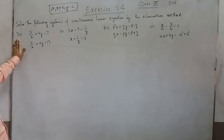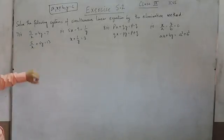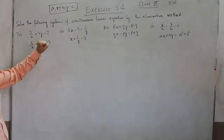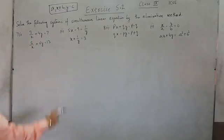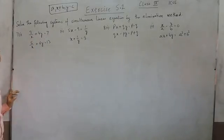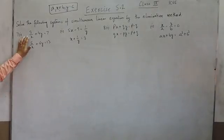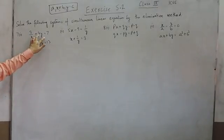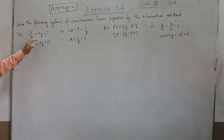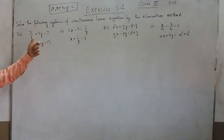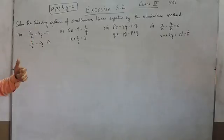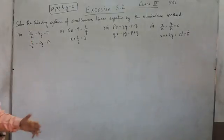Hello everyone. Question number 7 part 1 is 3 upon x plus 4y is equal to 7. Here there is a very important aspect. If I take x as the LCM then this term will become 4xy. So this has been converted to another term 4xy, which is basically a quadratic term, not a linear term.